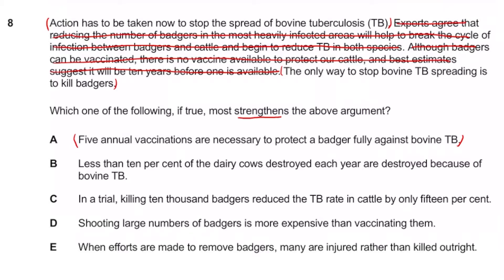Option C: in a trial, killing 10,000 badgers reduced the TB rate in cattle by only 15% — the word 'only' suggests it's not really that much benefit, which weakens the argument. Option D: shooting large numbers is more expensive than vaccinating them — if killing is more expensive, that also weakens the argument. Option E: when efforts are made to remove badgers, many are injured rather than killed outright — that shows the killing method isn't really effective, weakening the argument again. So option A is the correct answer.